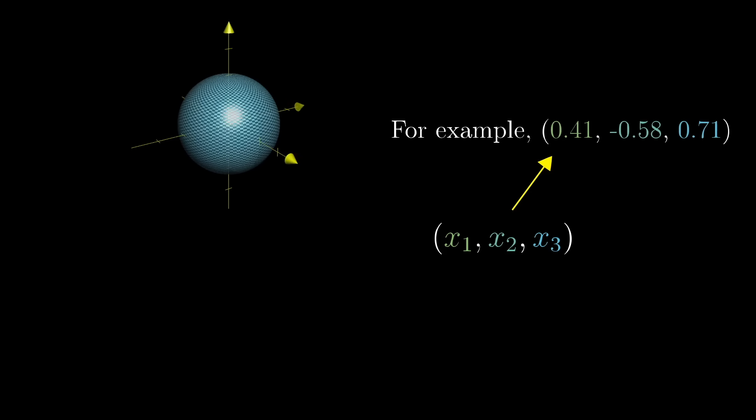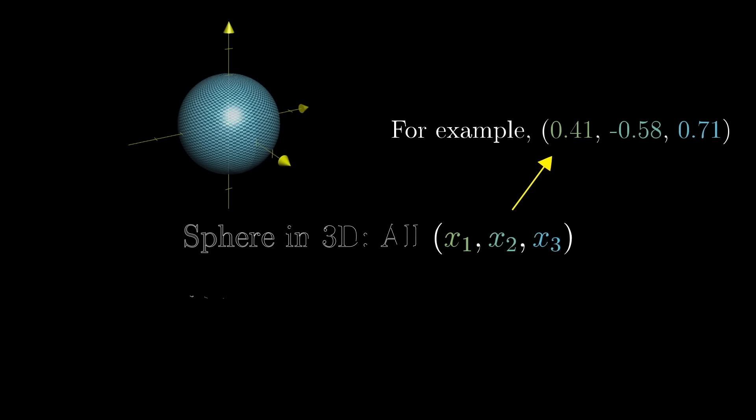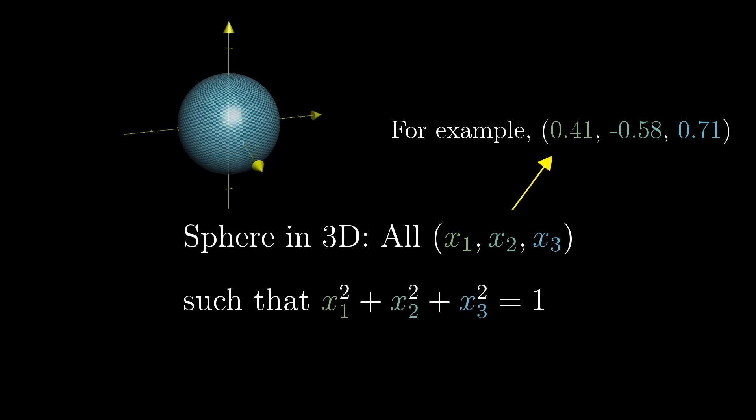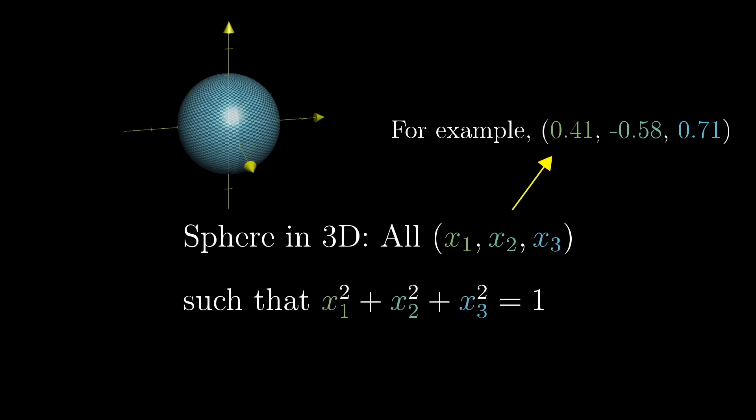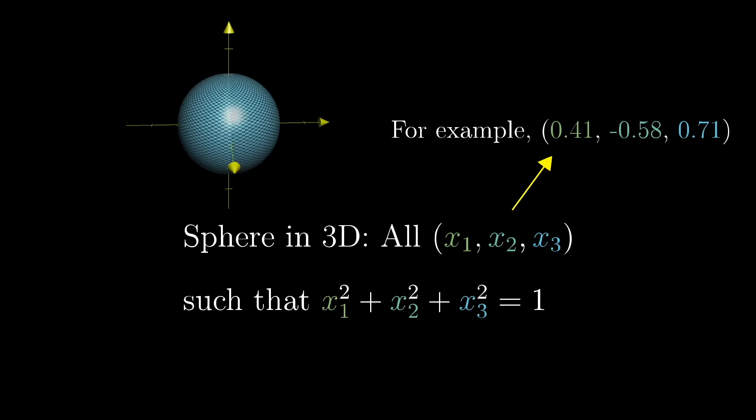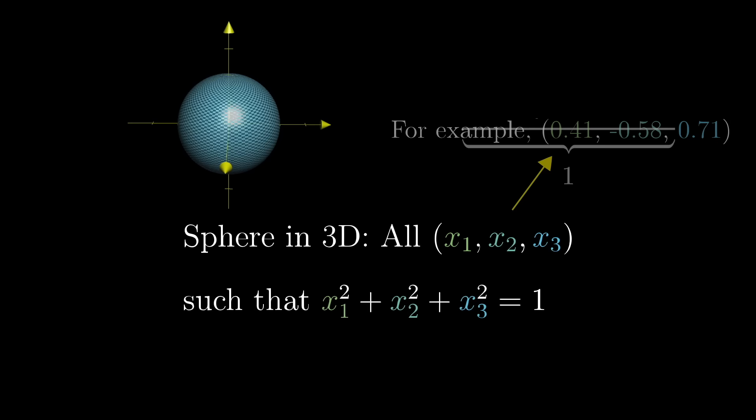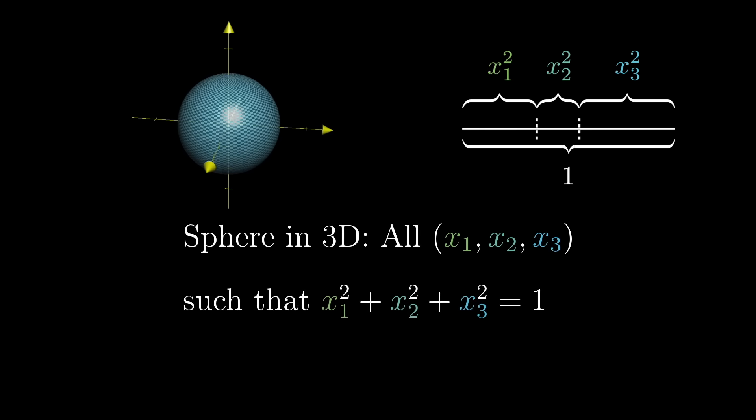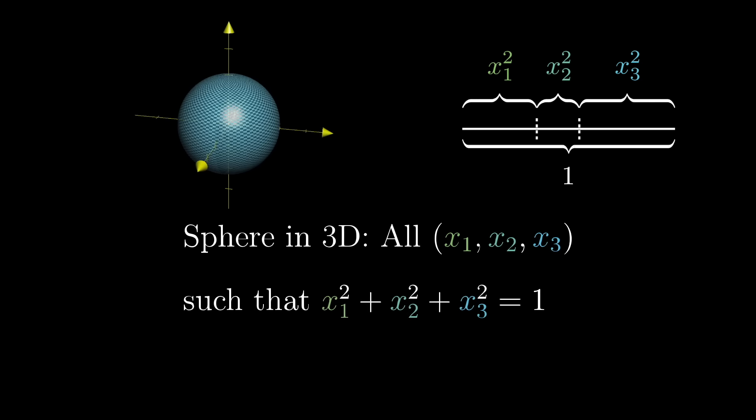And the simplest sphere to describe with coordinates is the standard unit sphere, centered at the origin, the set of all points a distance 1 from the origin, meaning all triplets of numbers, so that the sum of their squares is 1. So the geometric idea of a sphere is related to the algebraic idea of a set of positive numbers that add up to 1. That might sound simple, but tuck that away in your mind.